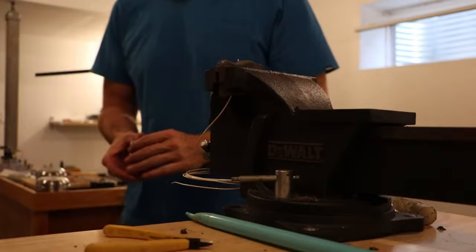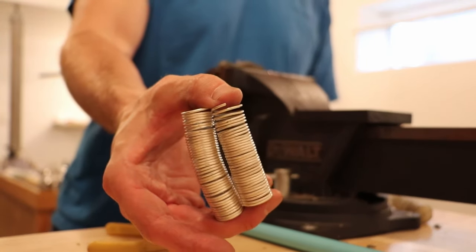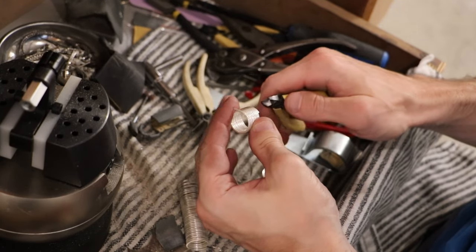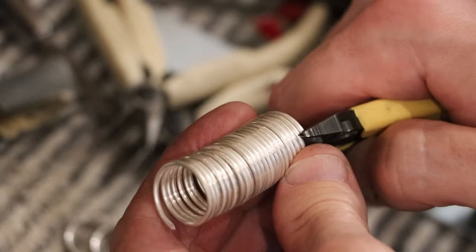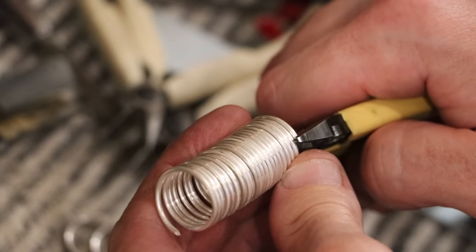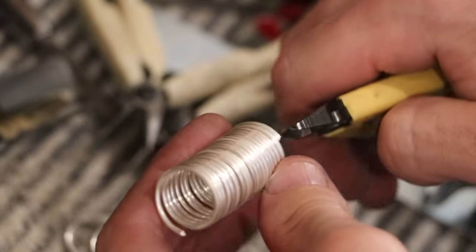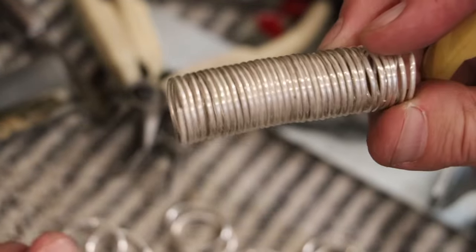Handmade silver jewelry, especially bracelets, holds a unique appeal that factory-made pieces can't match. Every piece tells a story, crafted by an artist who pours their heart and skill into making something beautiful. When you pick up a handmade silver bracelet, you're not just buying a piece of jewelry. You're embracing a piece of the artist's soul and the dedication it took to create it.